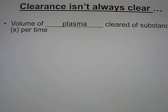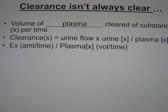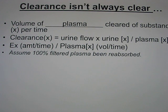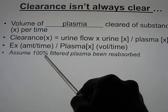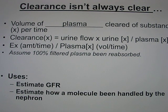Now let's look at a concept called clearance. Clearance is how much blood plasma is being cleaned per unit time. The equation is urine flow multiplied by urine concentration, divided by the plasma concentration. To do this calculation, we assume 100% of plasma will be reabsorbed back — not far from the truth, since over 99% is taken back. We use clearance to estimate GFR and to determine how a molecule is handled by the nephron.